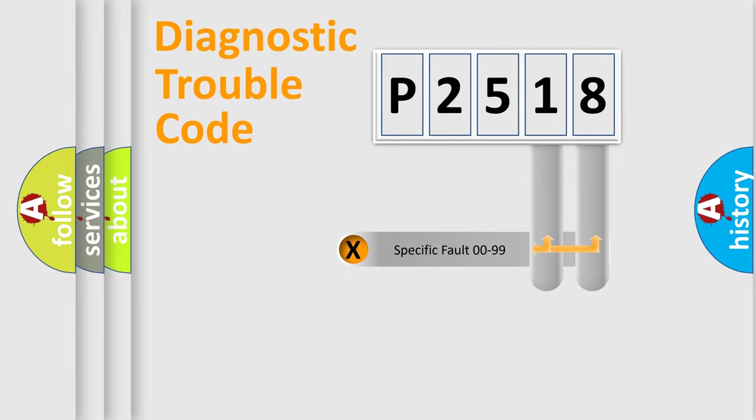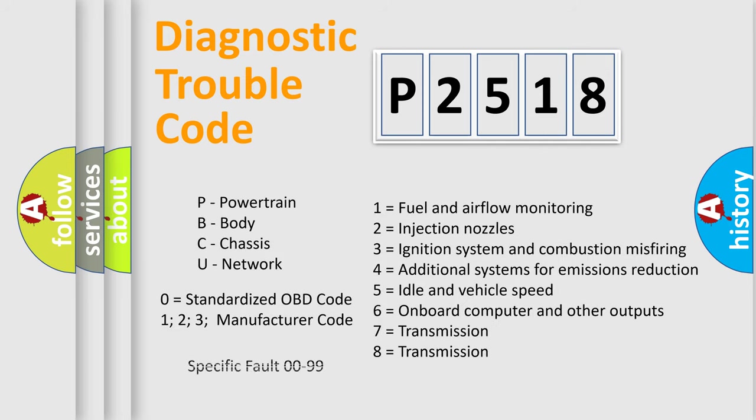Only the last two characters define the specific fault of the group. Let's not forget that such a division is valid only if the second character code is expressed by the number zero.